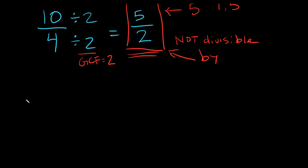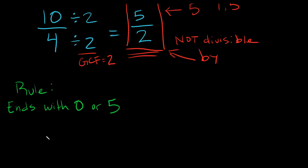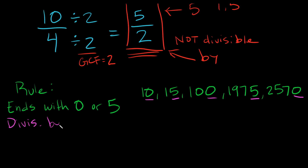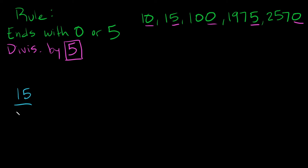Here's a quick rule: if you have a number that ends with zero or five, it's divisible by five. So numbers like 10, 15, 100, 1,975, or 2,570 — all these numbers end with either a zero or a five, so they're all divisible by five. So if I gave you 15 over 20, since both numbers end in five or zero, they're both divisible by five.